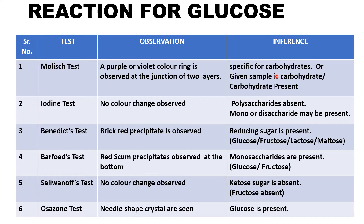The inference here is that carbohydrate is present. The next test to perform is the iodine test, which can differentiate whether the carbohydrate is a polysaccharide, disaccharide, or monosaccharide. Since glucose is a monosaccharide, it will give no change in the solution. Inference: polysaccharide is absent, so the sample could be either a monosaccharide or disaccharide. Now I need to confirm which one, so I will perform Benedict's test.